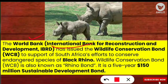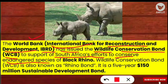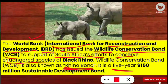The World Bank, also known as the International Bank for Reconstruction and Development (IBRD), issued the Wildlife Conservation Bond (WCB) to support South Africa's efforts to conserve the endangered black rhino. This bond is also known as the Rhino Bond. It is a five-year project worth 150 million dollars and is classified as a sustainable development bond.